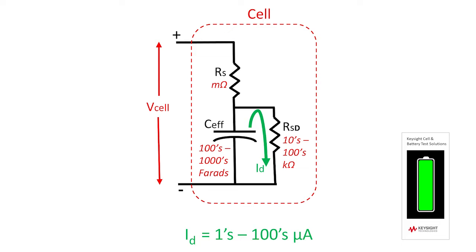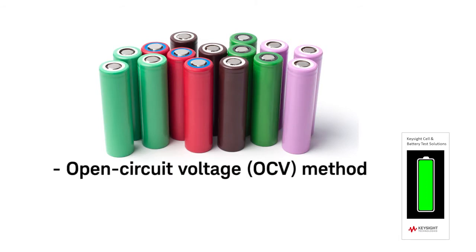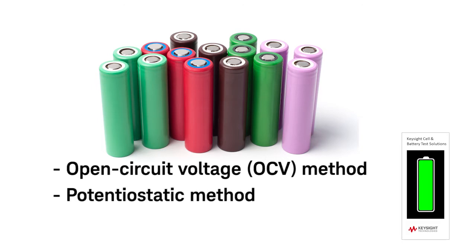Over weeks or months, this self-discharge path depletes the stored charge of the cell, thus causing the cell voltage to gradually decrease. Two of the methods for measuring self-discharge are the open circuit voltage, or OCV method, and the potentiostatic method. In this video, we will look at the OCV method.